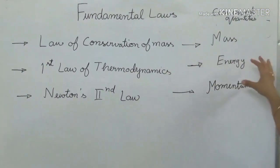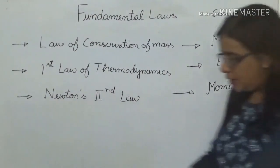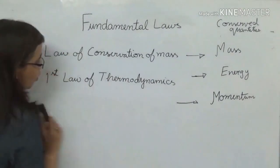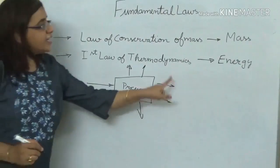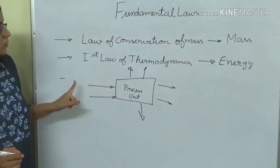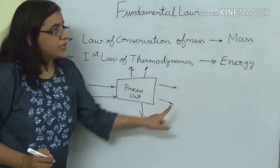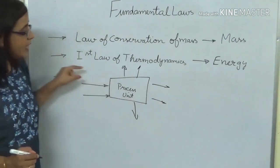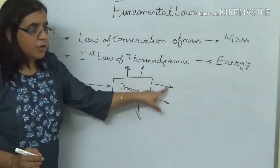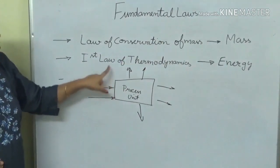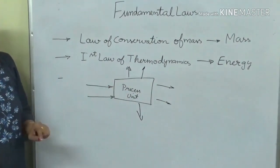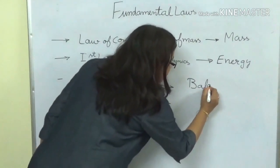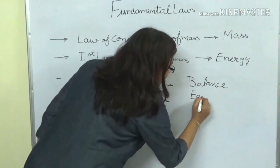We can write balance equations only on a conserved quantity, because conserved quantities are not being destroyed or created — whatever goes in should come out. So we can write balance equations on mass and energy. Whatever equations we write on these conserved quantities are known as balance equations.